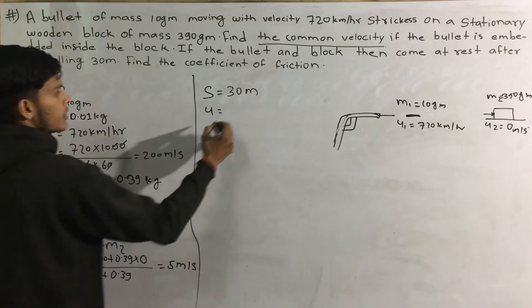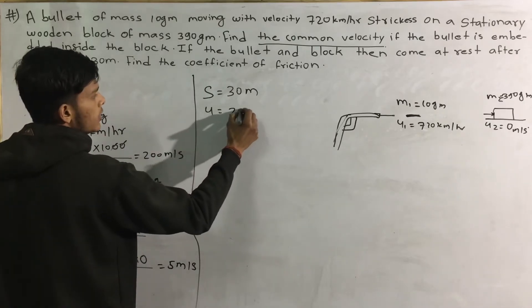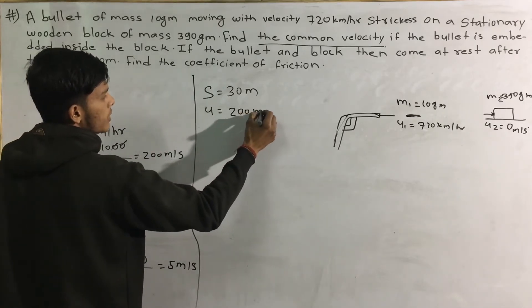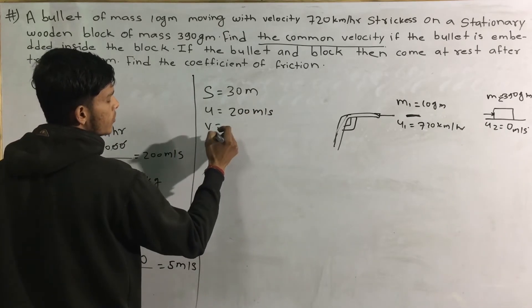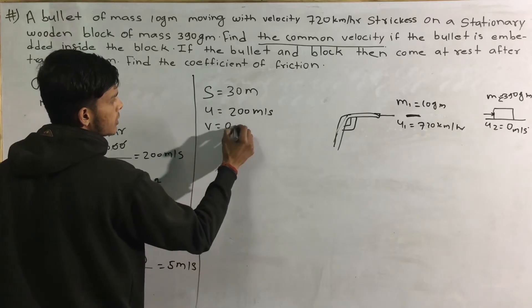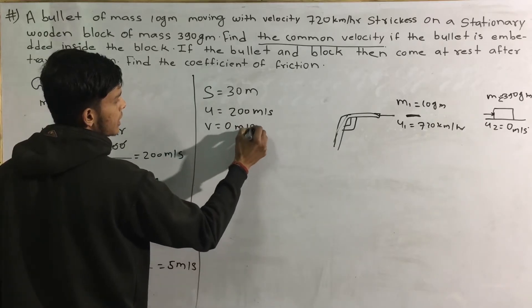The bullet initial velocity is 200 meters per second. The test value is 0 meters per second.